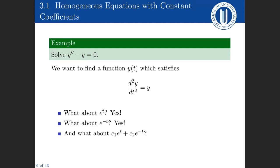What about a linear combination of e to the power t and e to the power minus t? If we differentiate this twice, we still have the function we started with. In fact, this is the general solution to this equation. Every solution can be written as c1 e to the power t plus c2 e to the power minus t, for some constants c1 and c2.